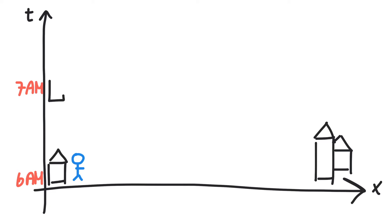What happens an hour later? The houses surely haven't moved, and neither did you, so your movement is best represented by a straight line going up. This line is called your world line and is used to visualize motion in a Minkowski diagram.